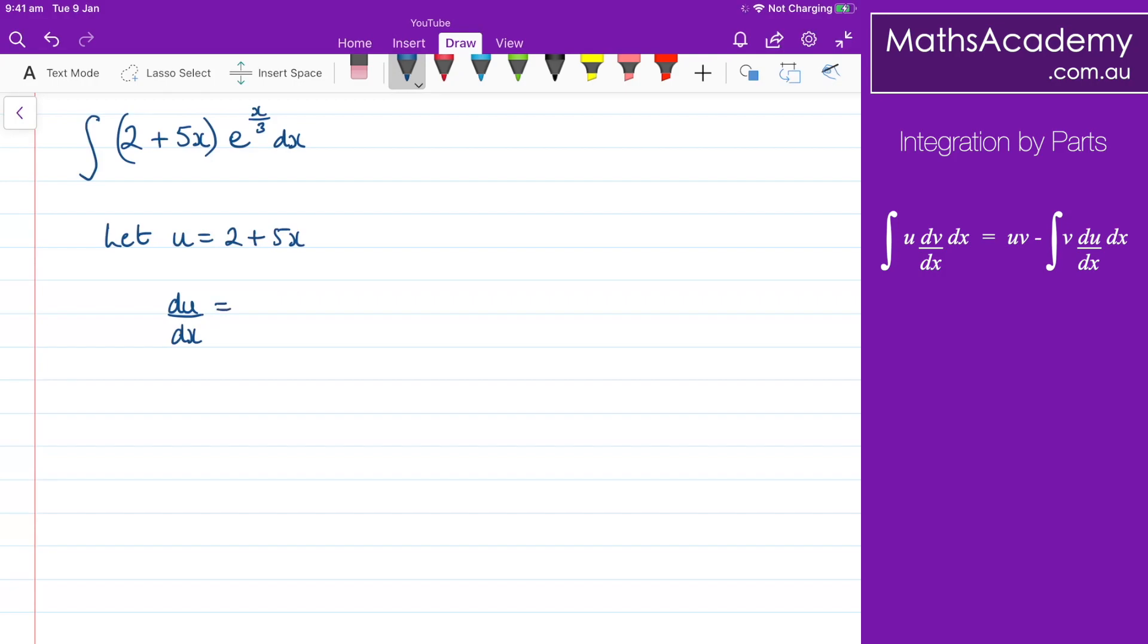My dv by dx term, obviously that's going to be equal to e to the x over 3. I need to integrate that to get v, and that would be 3e to the x over 3.